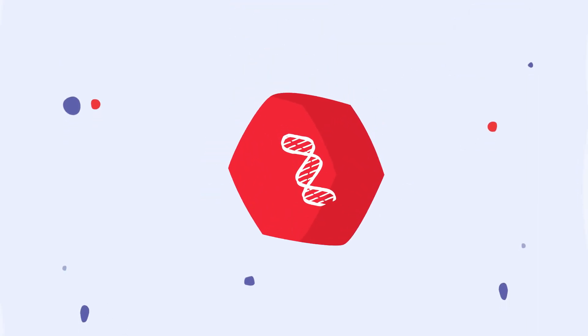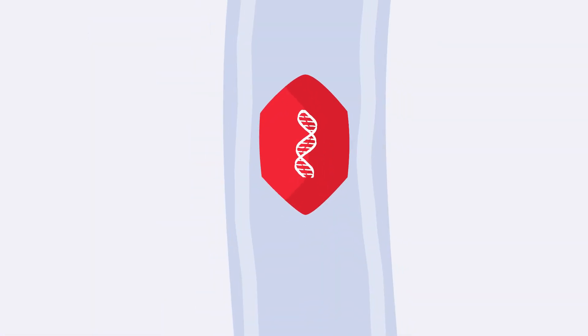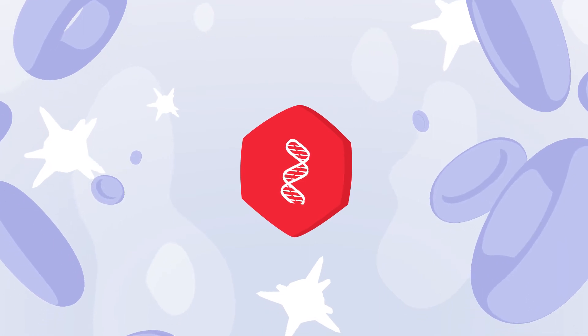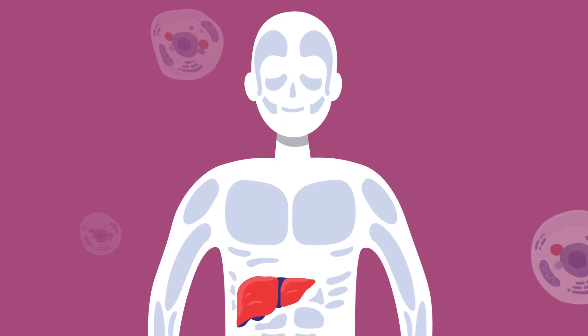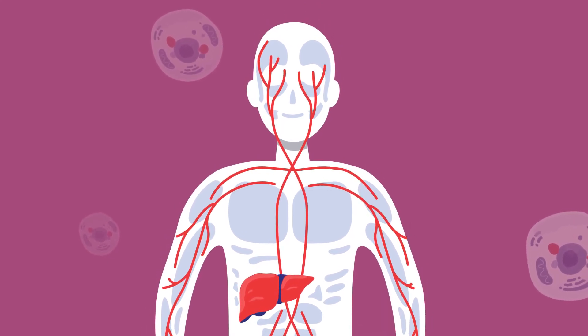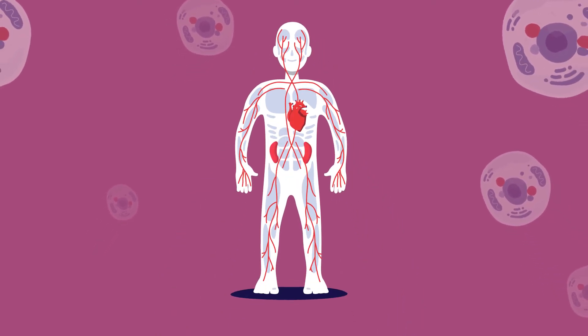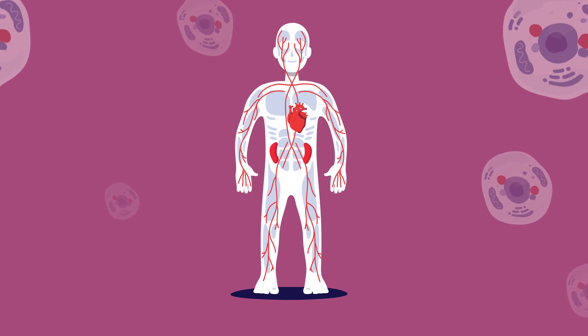For in vivo, a vector carrying a working version of a GLA gene is injected into the body. In one approach, the vectors are delivered to the cells of the liver, which then secretes the enzyme into the bloodstream for delivery to other organs, including the heart, kidneys, and other affected tissues.